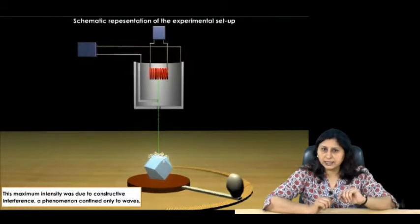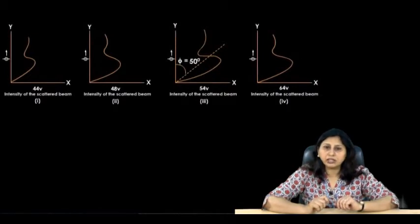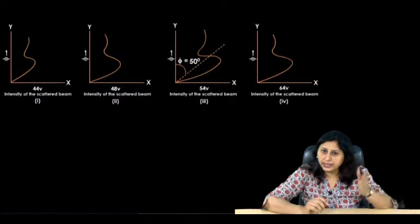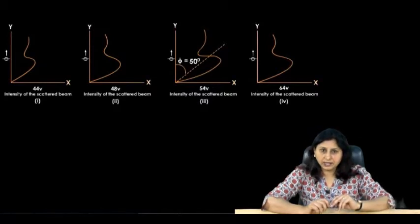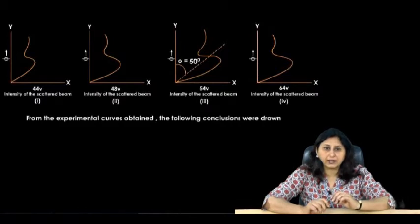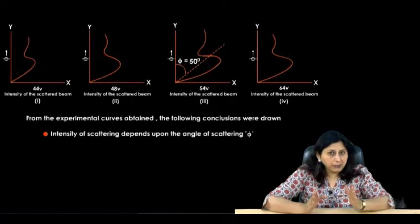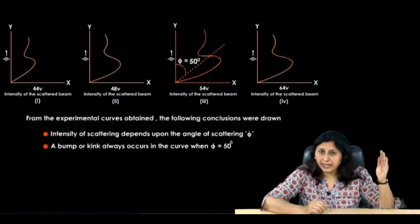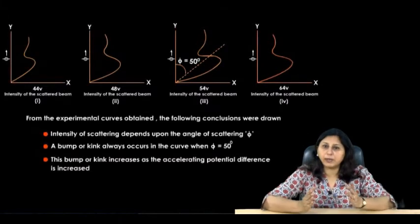Davison and Germer plotted a graph taking the angle between the incident and scattered direction of the electron beam, phi along the y-axis and the intensity of the scattered beam at different values of accelerated potentials along the x-axis. The nature of the graph is as shown. From the experimental curves obtained, the following conclusions were drawn. Intensity of scattering depends upon the angle of scattering phi. A bump or kink always occurs in the curve when phi equals 50 degrees. This bump or kink increases as the accelerating potential difference is increased. At 54 volt, this bump is maximum and then it decreases on further increase of potential difference. This peak indicated the wave behavior of the electrons.